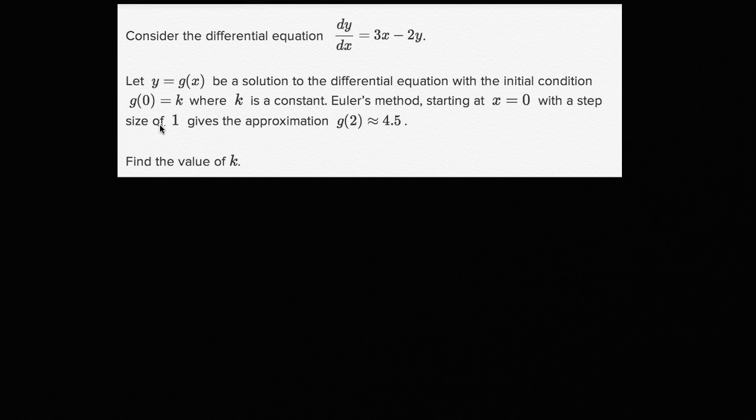So we're essentially going to step once from 0 to 1, and then again from 1 to 2, and that approximation is going to give us 4.5. Given that we started at k, we should be able to figure out what k was to get g(2) approximated as 4.5. With that, I encourage you to pause the video and try to figure this out on your own.